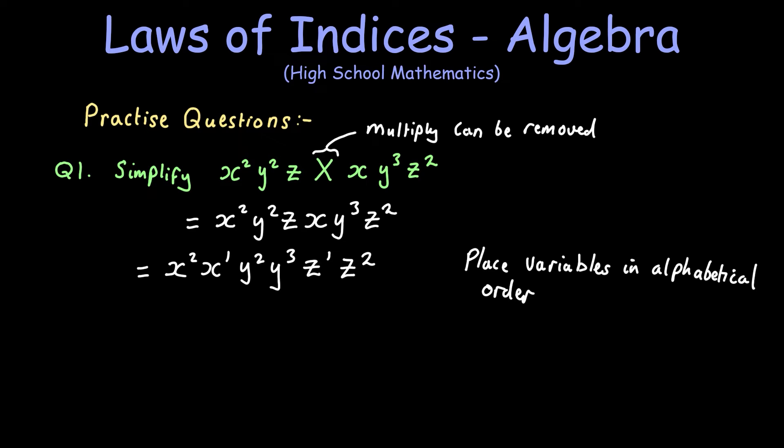So we end up with x squared, x to the power of one, y squared, y cubed, z to the power of one, z squared. And here we can just use law one to add the powers together for the same base.